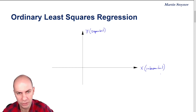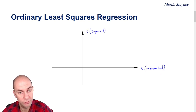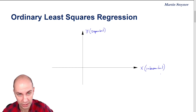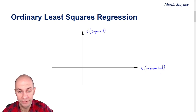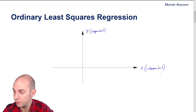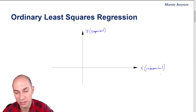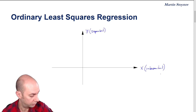By way of example, the independent variable could be the return of a broad-based market index, for example the S&P 500. And the dependent variable could be the return of a given stock, for example Apple. The hypothesis we are going to make here is that the stock market is the driver of stock returns, not the other way around.